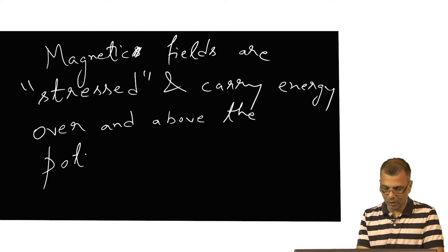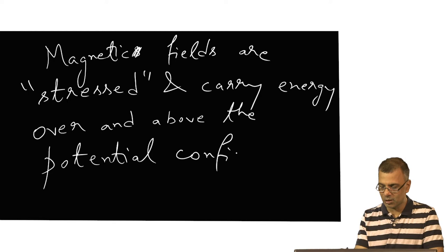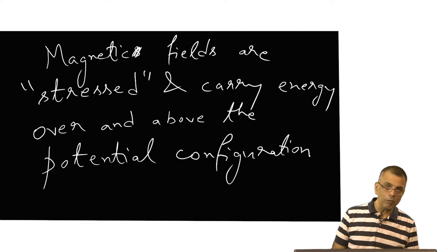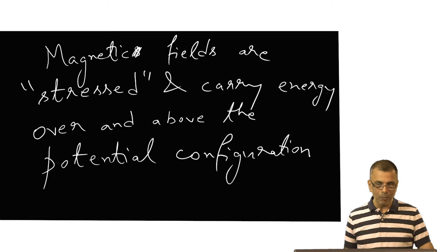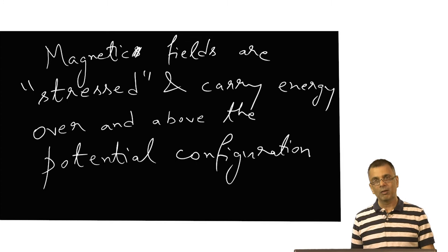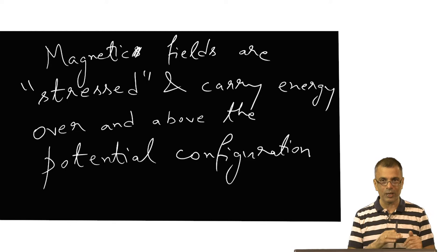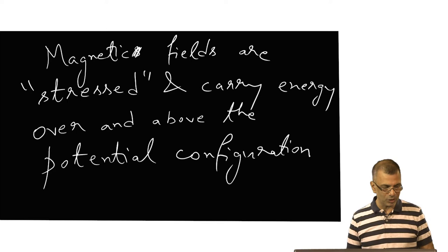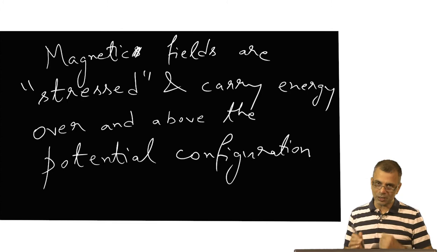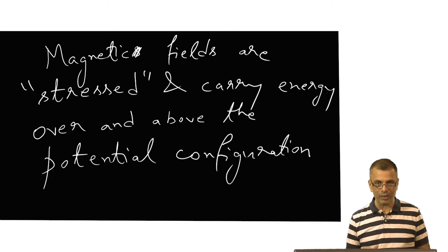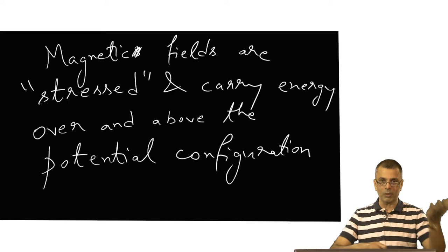Everything in nature generally likes to relax to the potential configuration. If I place a pencil on the edge of this table, it tends to fall off — because it's attracted by gravity, and it falls off so as to attain the lowest possible potential energy. Nature always tends to minimize energy, and the potential configuration is the lowest possible energy state. But in many astrophysical situations, there is reason to believe that the magnetic fields are stressed or twisted because of plasma motions. I just want to motivate why we are talking about reconnection at all.